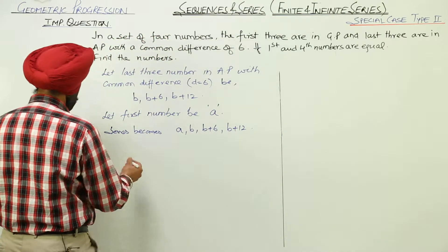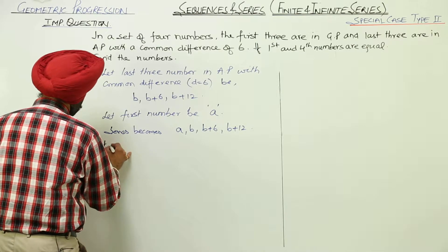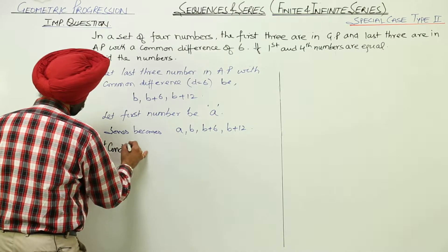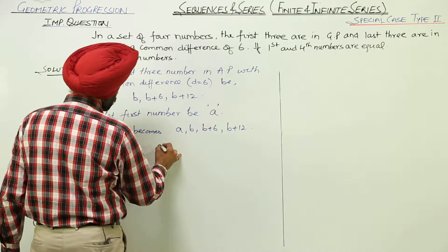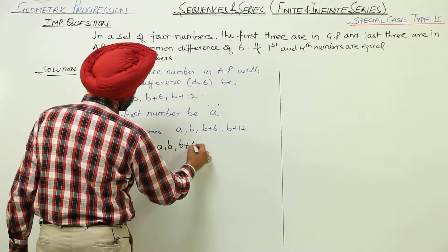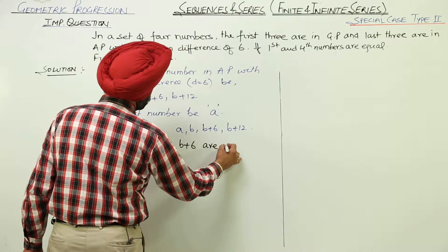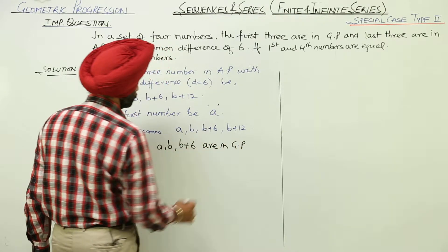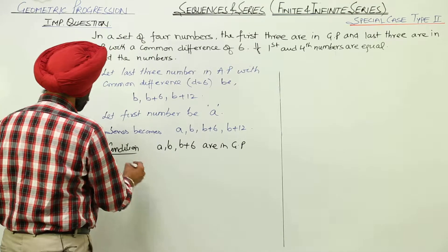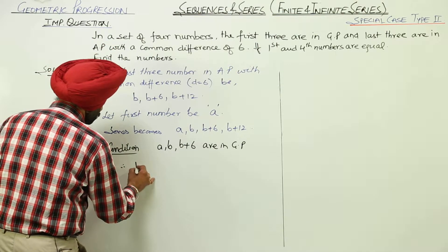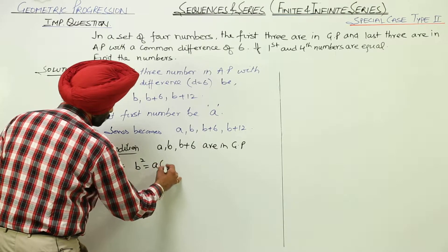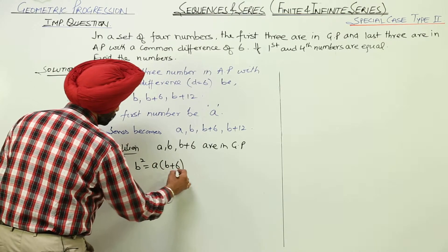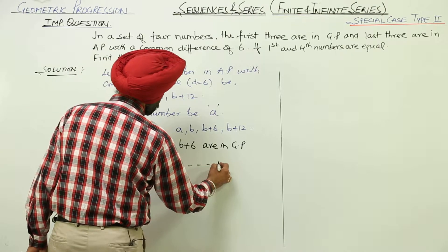Now, what is the first condition? First condition: A, B and B plus 6 are in GP. This is the first condition. Therefore, when it is in GP, we can write B square is equal to A with B plus 6. Number 1.